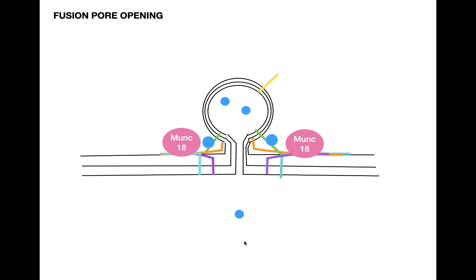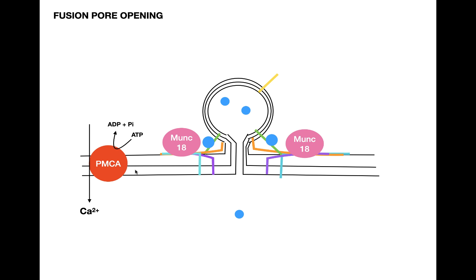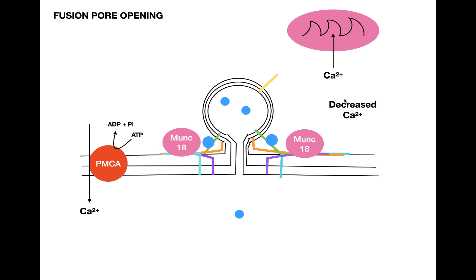As neurotransmitters are being released, calcium is being removed from the cytosol. The first protein responsible is PMCA, the plasma membrane calcium ATPase, which pumps calcium from the cytosol into the extracellular fluid using ATP hydrolysis. At the same time, the mitochondria of the synaptic terminal also seclude calcium. Both the mitochondria and PMCA work together to decrease calcium levels.